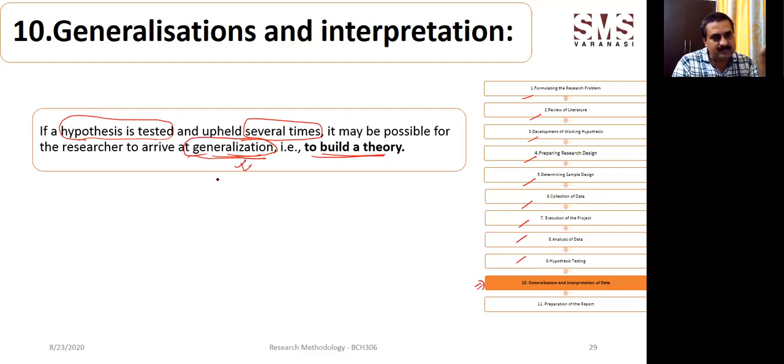If we are going to generalize that result to a larger population, that means we are accepting that whatever we have found for a particular population is going to be accepted for a large population. So we are basically going to generalize the result.